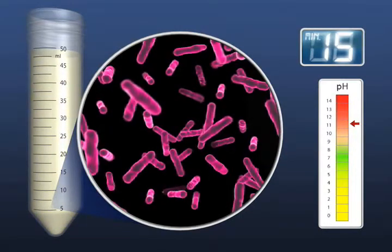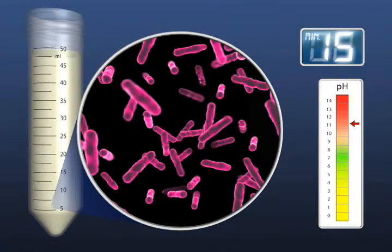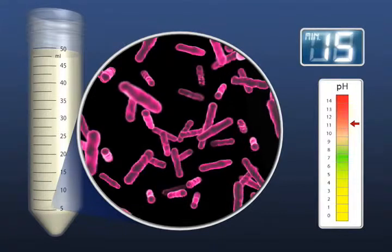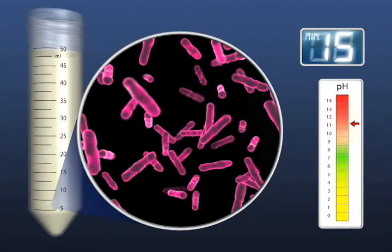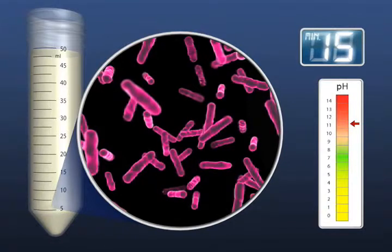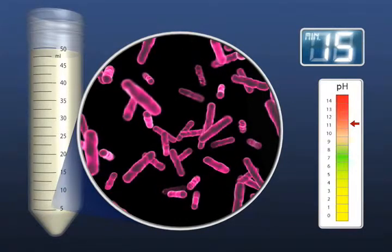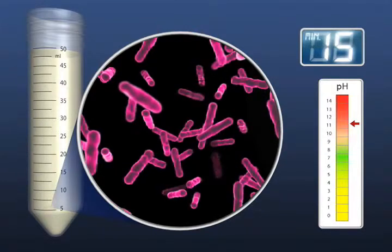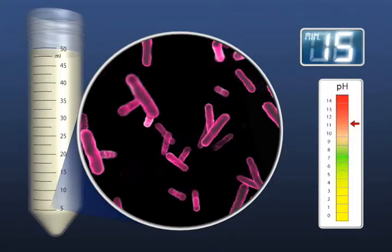One of the critical flaws in the traditional specimen preparation process is the fact that this neutralization has traditionally been attempted using M15 phosphate buffer, saline, or water. This buffer is completely unable to neutralize the basic decontaminant. This leaves the sample well above the toxic level for mycobacteria and dramatically reduces the number of viable mycobacteria available for diagnostics.